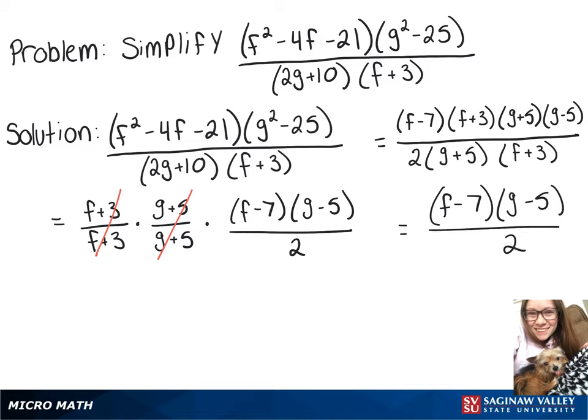So that's one way you can write the answer, or you can multiply the top out, which gives us fg minus 5f minus 7g plus 35 over 2. Let's move on.